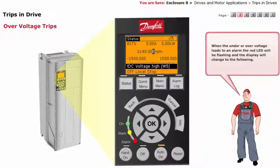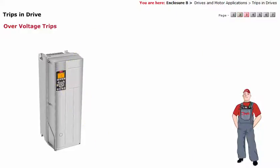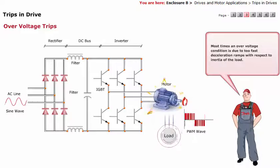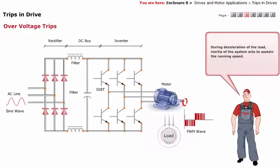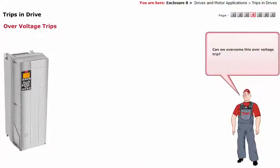When under or over voltage leads to an alarm, the red LED will be flashing and the display will change accordingly. Most times, an over voltage condition is due to too fast deceleration ramps with respect to the inertia of the load. During deceleration, the inertia of the system acts to sustain the running speed. Can we overcome this over voltage trip?